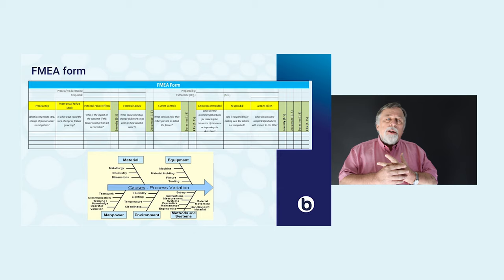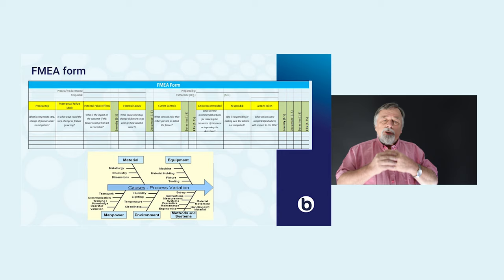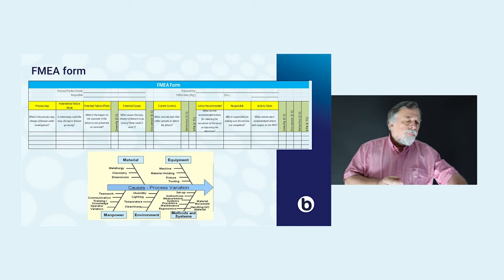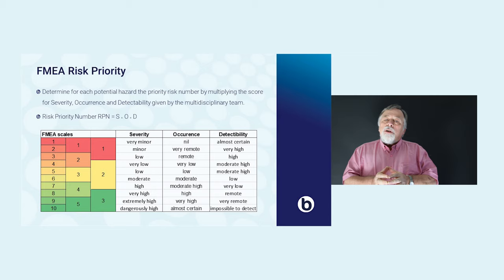This will guide you through the steps. To determine the risk priority number, you can use different scales — a scale from one to three, one to five, or one to ten.